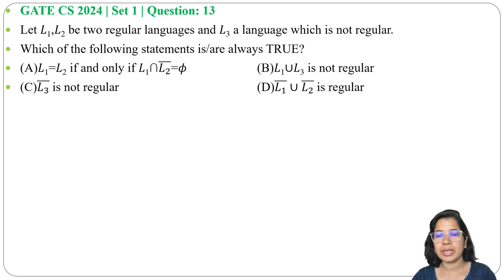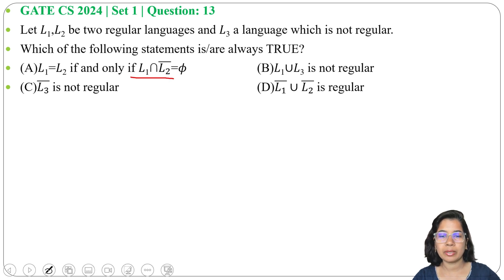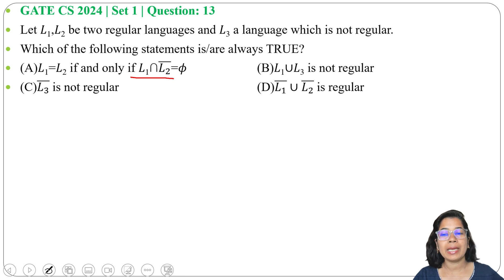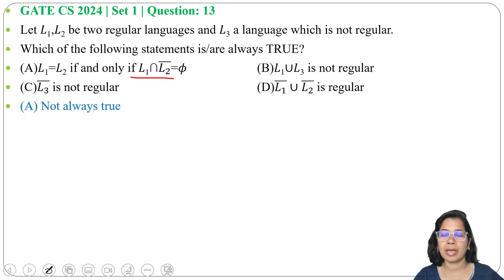Option A: L1 equals L2 if and only if L1 intersection L2 complement equals the empty set. This may or may not be true — it depends on the specific language. That's why Option A is false.